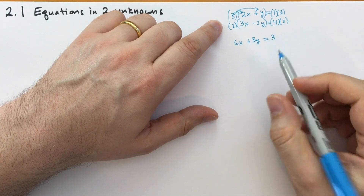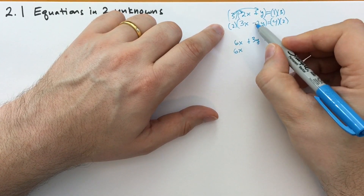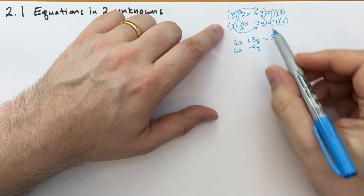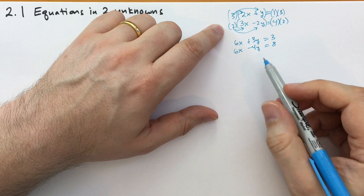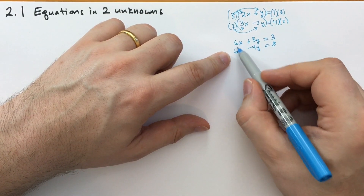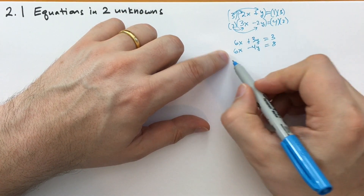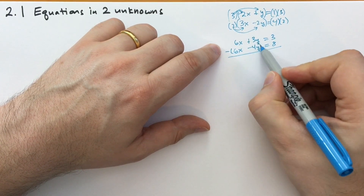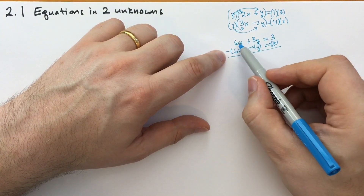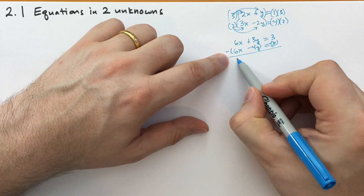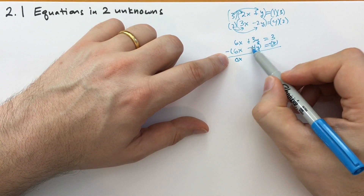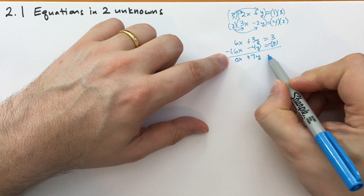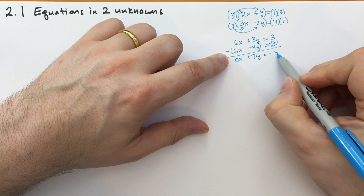On the right side we get 3. And the second equation gives us 6x minus 4y, distributing the 2 to both terms, and on the right side we get 8. Now if we subtract the second equation from the first, 6x minus 6x is 0x. Then 3y minus minus 4y is the same as adding 3 and 4, giving 7y. And 3 minus 8 is minus 5.